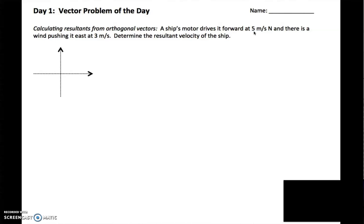So I'm going to go ahead and draw those vectors on my little xy axis here. I'm going to start with that first one, forward five meters per second north. So I'm going to use my cardinal directions here. So this would be five meters per second north. Then we have a wind pushing it east at three meters per second. So north, east, south, etc. But now here's east. I know it's a little bit shorter, three meters per second.